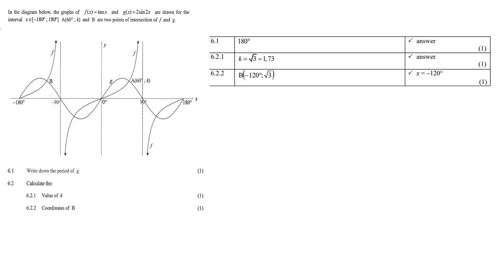So the first question is, write down the period of g. Now remember, g is the sine graph. If you go to the equation of g, you will see it is 2sin2x. Now that 2 is an indication that this graph's period shrunk to half its original size. So it's no more 360, but it is 180. So therefore it's 360 by 2, which is 180. Did you notice in this question, 6.1 and 6.2, it's only one mark each. So they don't expect you to do any calculations, it is just straightforward deductions.